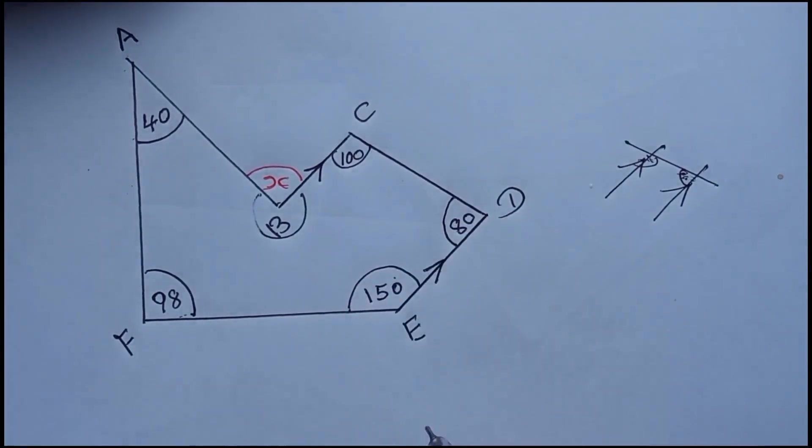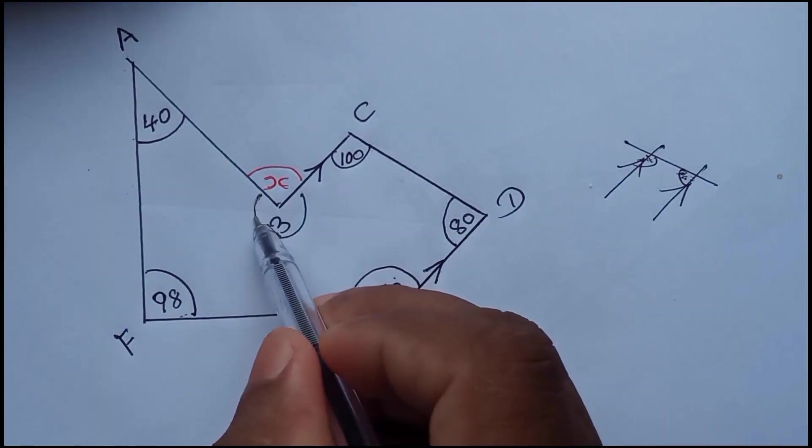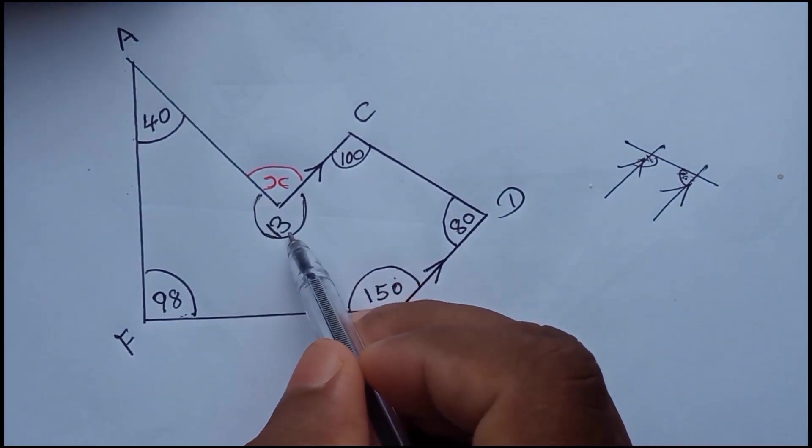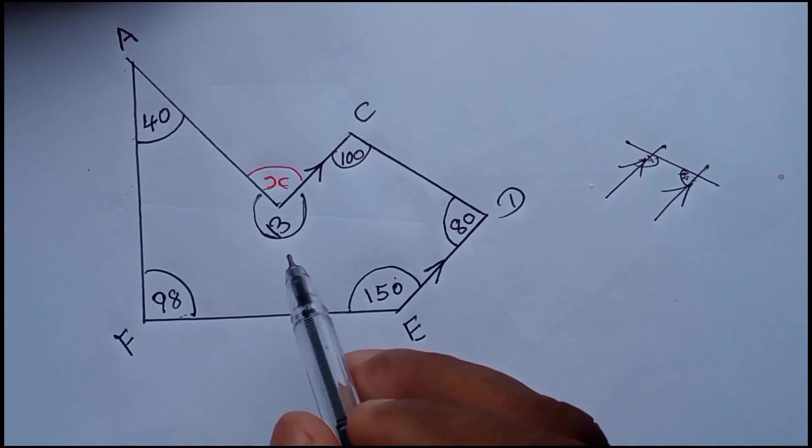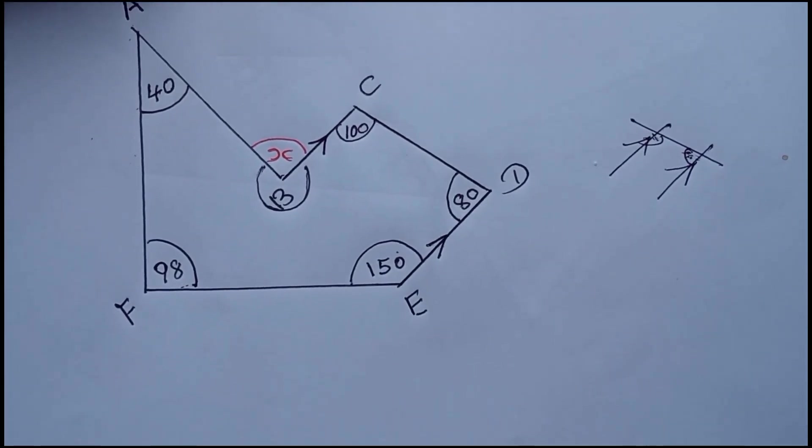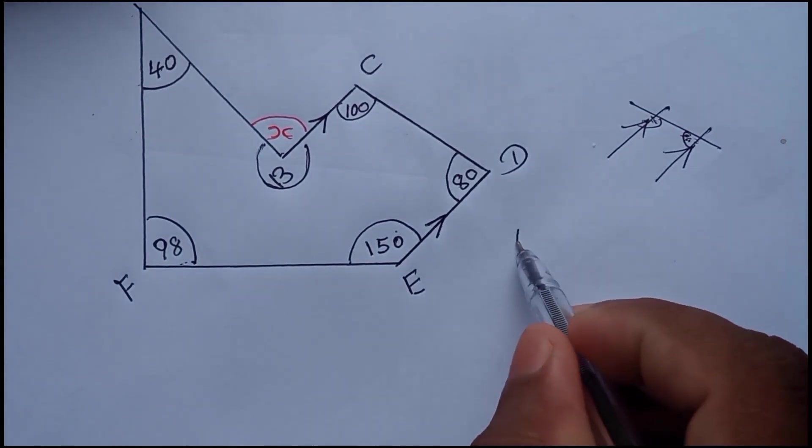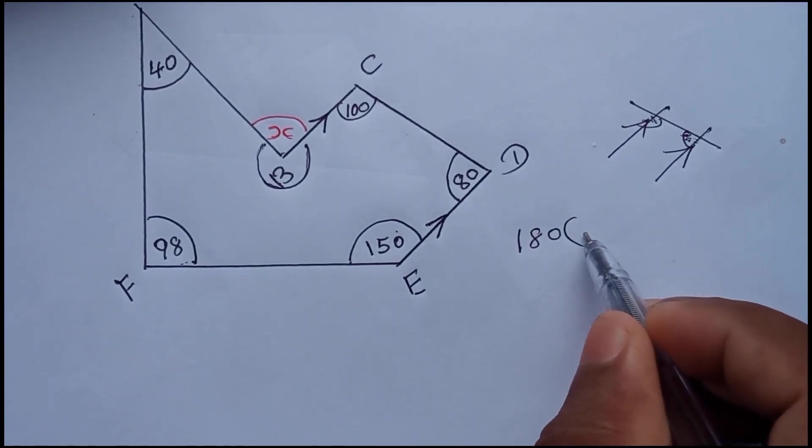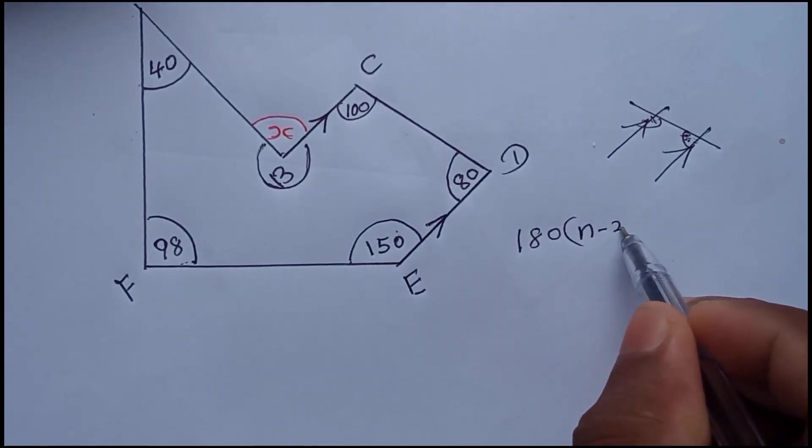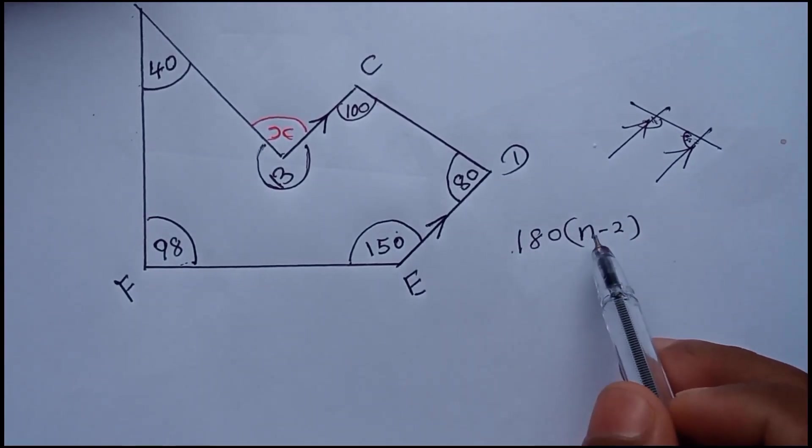This should be 100, right. And then now we have a problem, what the value of this one, right? To get that, you need to remember this formula: 180 into n minus 2. This means using this one, you can find any polygon total of the interior angles.